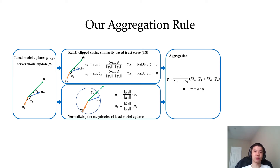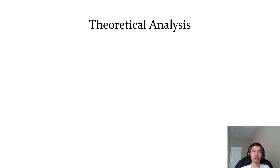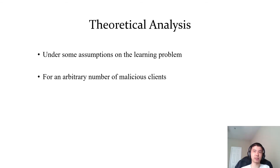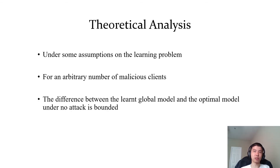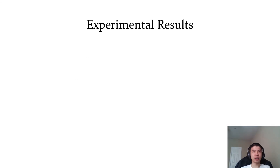Where beta is known as the learning rate. Theoretically, we show that under some assumptions, for an arbitrary number of malicious clients, the difference between the global model learned by FLTrust and the optimal global model under no attacks can be bounded.